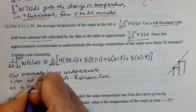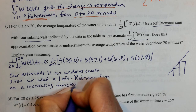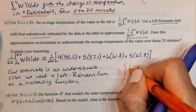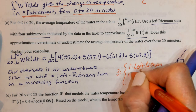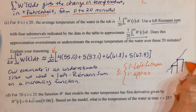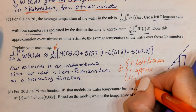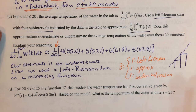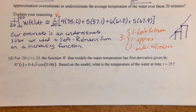Our estimate is an underestimate since we used a left Riemann sum on an increasing function. This part was worth 3 points: one for the left Riemann sum, one for the approximation including the 1/20, and one for the underestimate with reason.